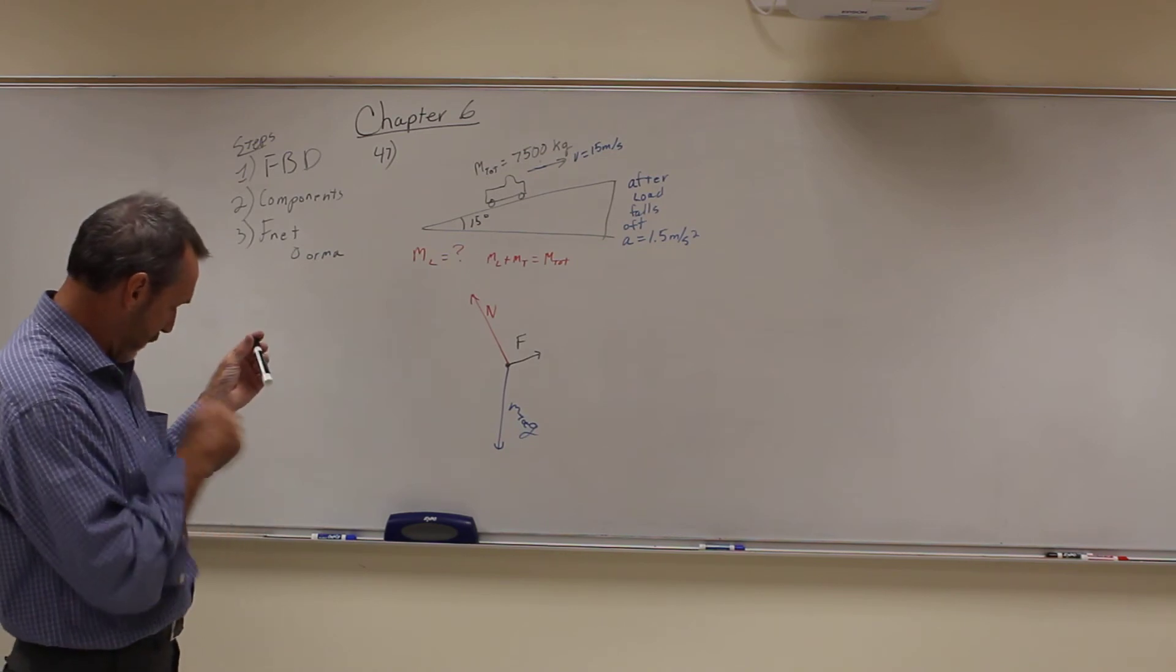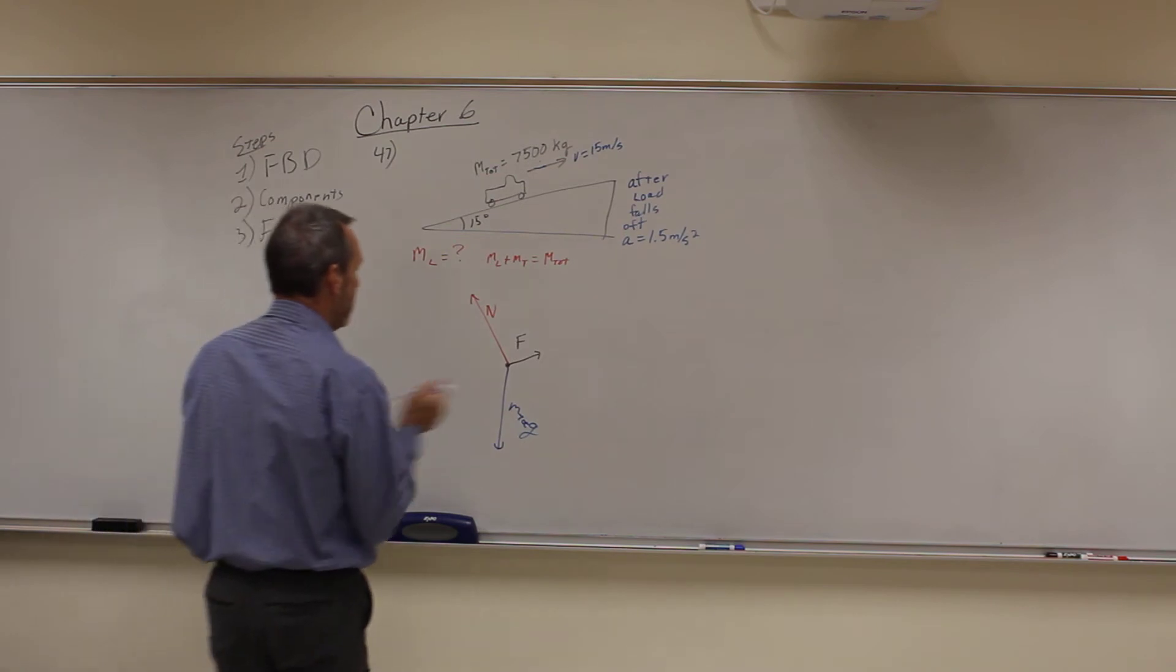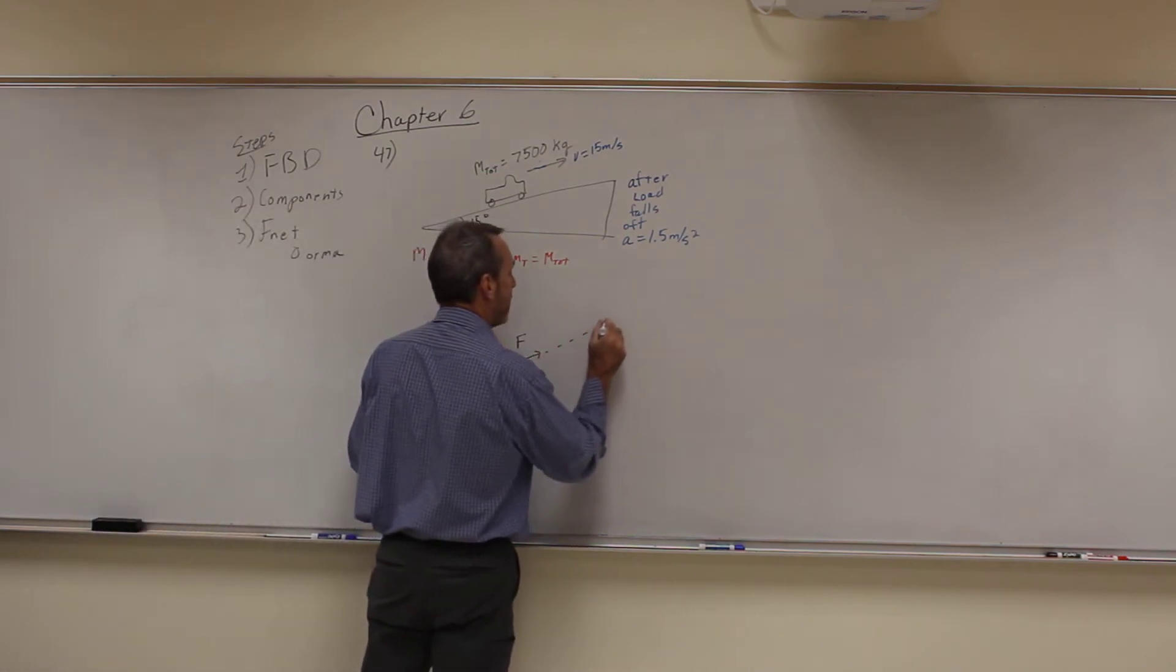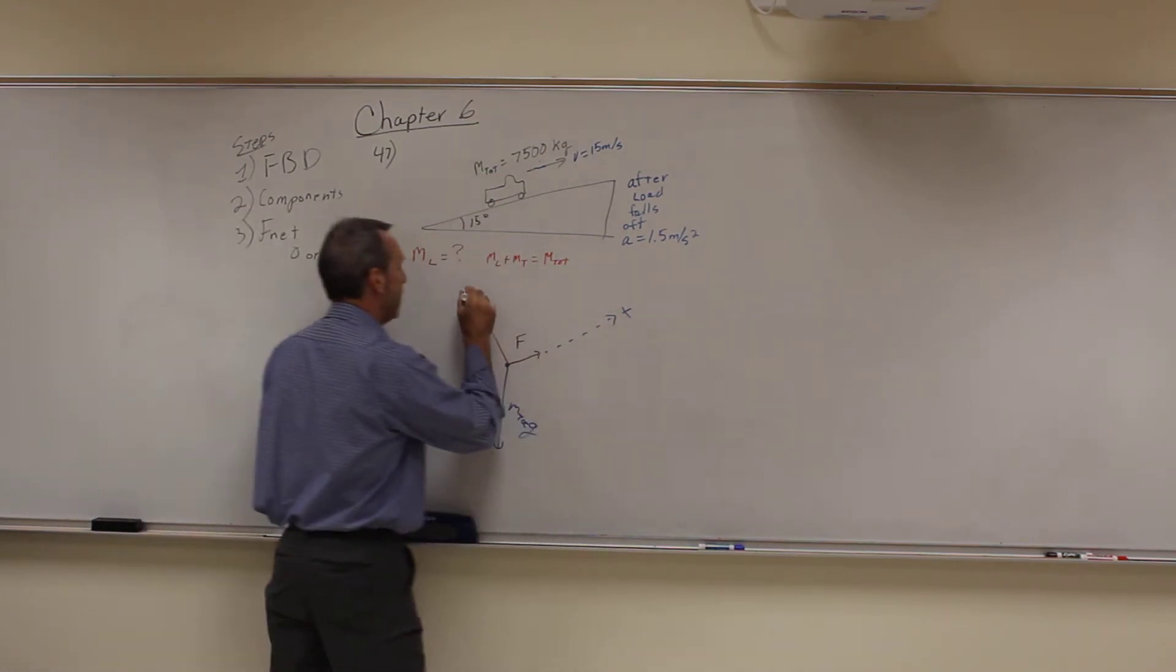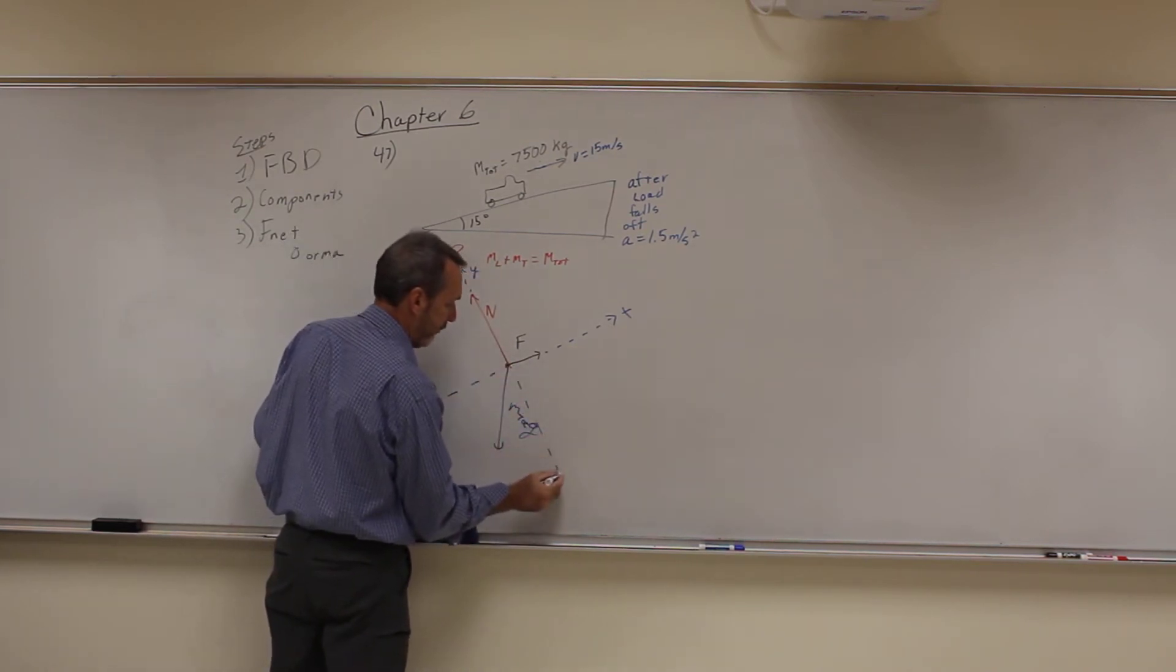We're going to ignore rolling friction, so that's all that we have. So we're going to do the same thing we usually do with an inclined plane. We're going to put our axes to the direction of motion in the x direction, y direction, negative x, negative y. And then we're going to take components here.